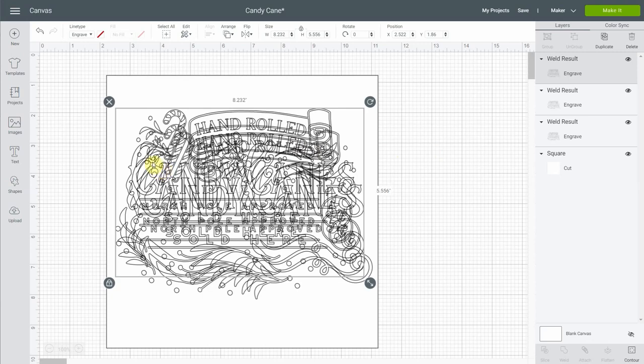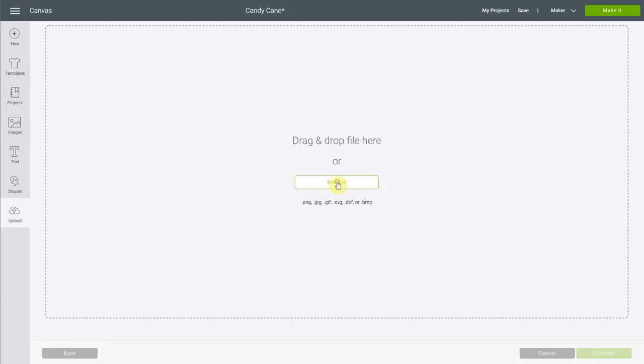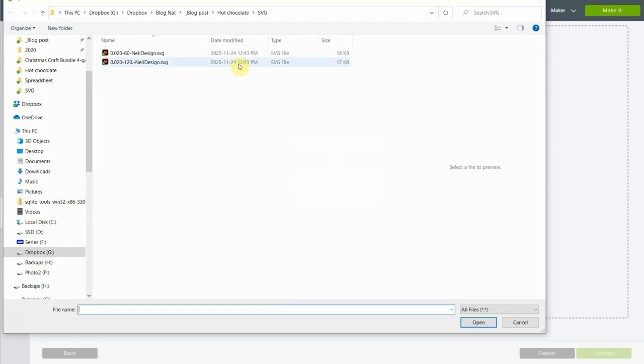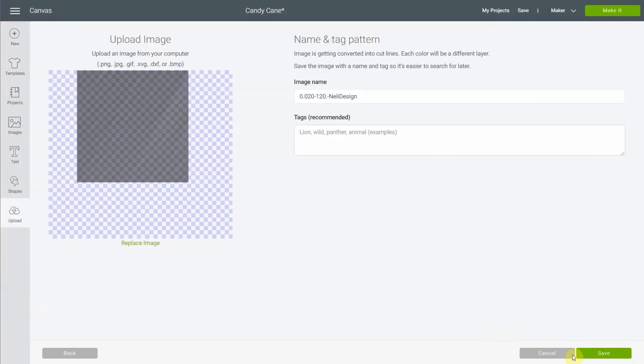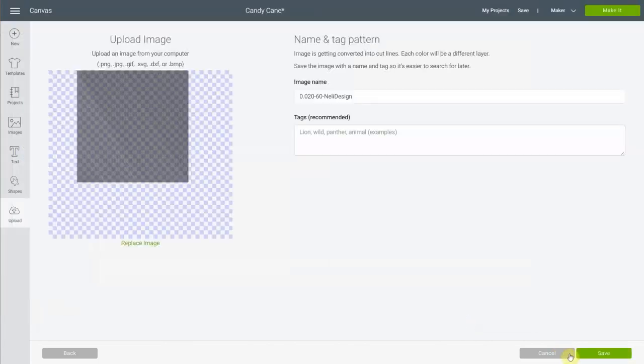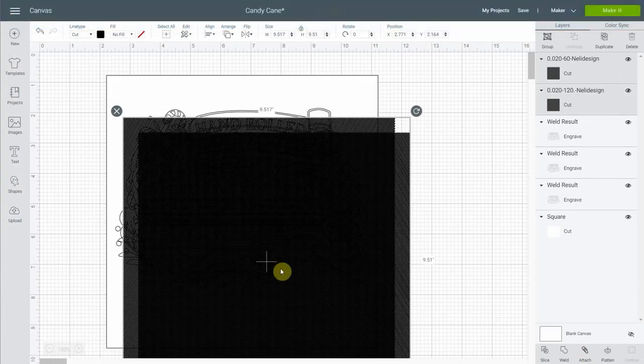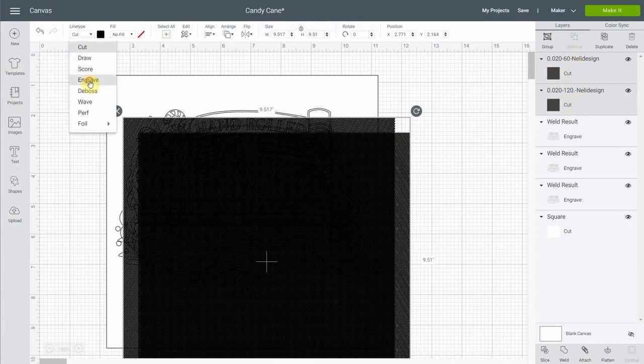What we want to do now is import these hatches. So I'm going to upload and I'm going to upload images and we're going to go where you download them from Nelly Design Library. So for myself, it's right here. And I named them 0.020-60 and 0.120. So it's 60 degrees or 120 and it's a spacing of 0.02 inches. So let's select this one. Open. You're going to see a big square like this one. I'm going to select the other one. And I'm going to insert both of them. Okay. So right away, while they are selected, I'm going to make sure to put them to engrave also so I don't forget.